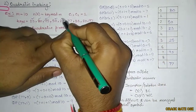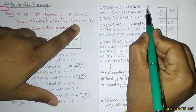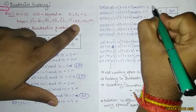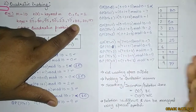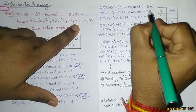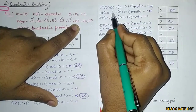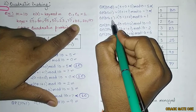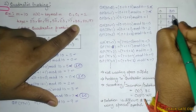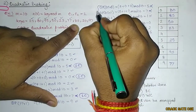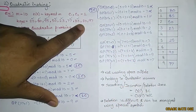For key=85, i=0: 85 mod 10 = 5 — slot 5 is full. i=1 gives slot 7 — also full (95 is there). i=2 gives slot 1, which is empty, so 85 is stored at slot 1. That gives 2 collisions for key 85.